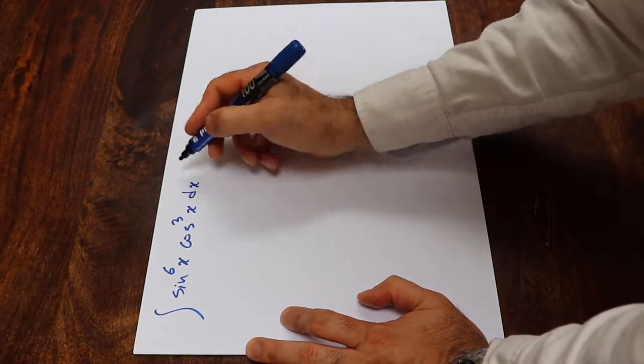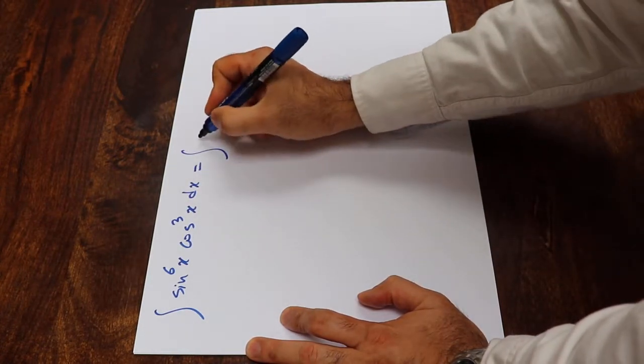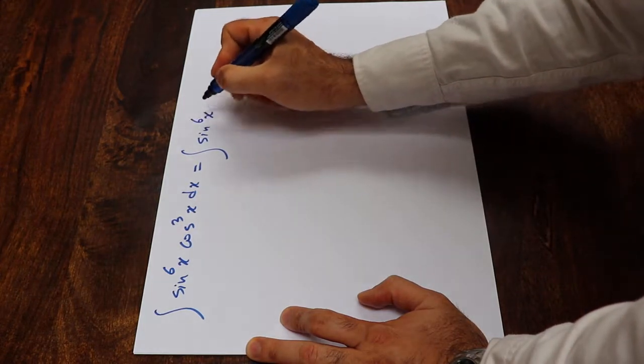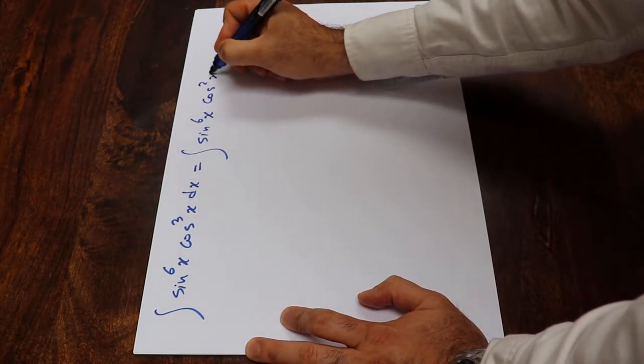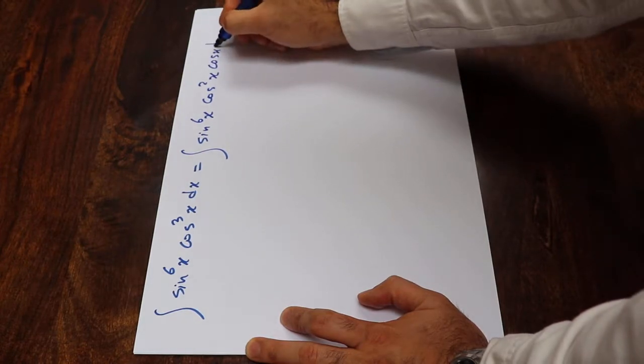So you can rewrite this integral as sine 6x, and instead of cosine 3x I can write cosine 2x times cosine x dx.